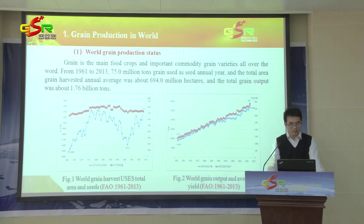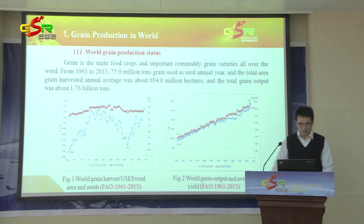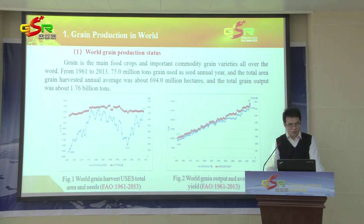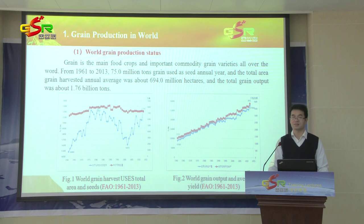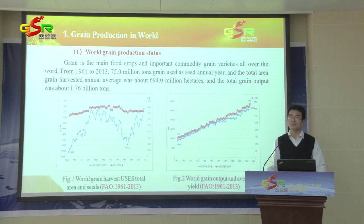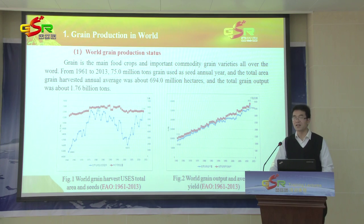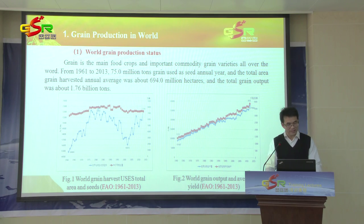Since 2003, the world's total grain harvest area reached 722 million hectares, nearly back to the 1981 level. Since 2000, the total grain harvest area has been increasing by about 1%, with 1981 being the highest level in history.